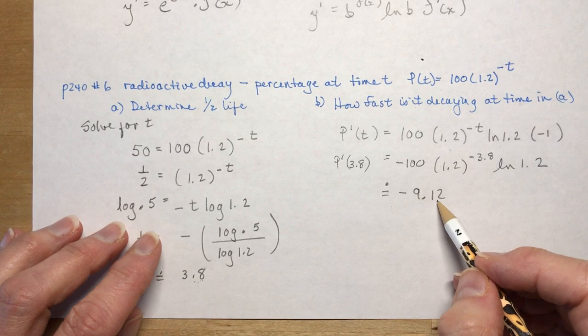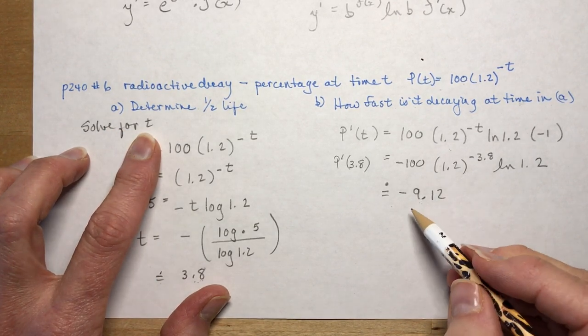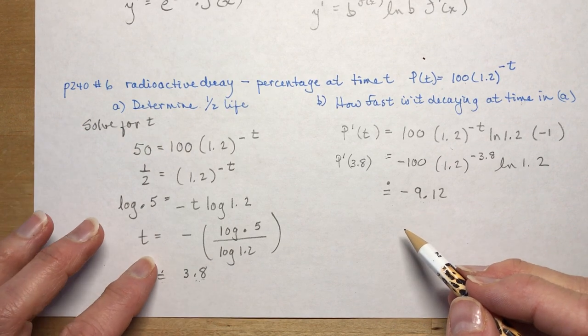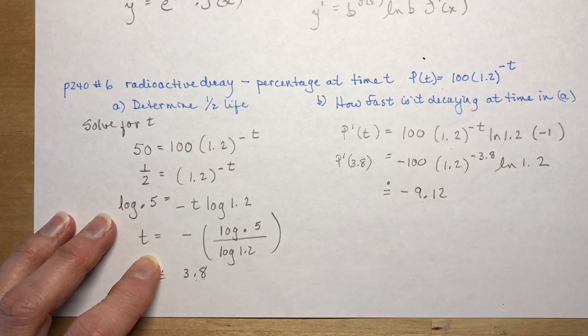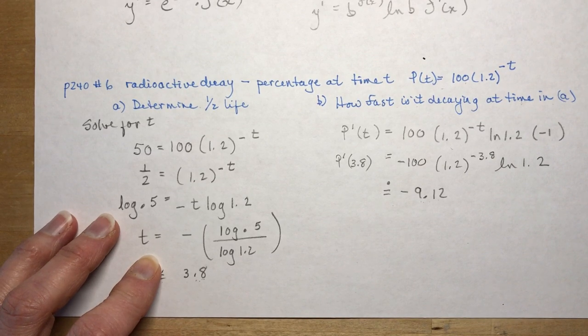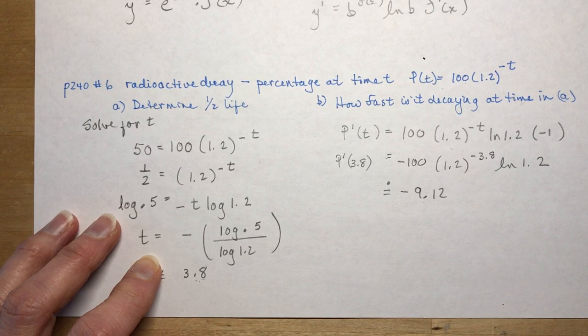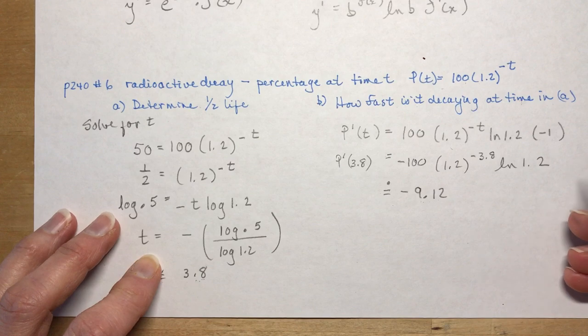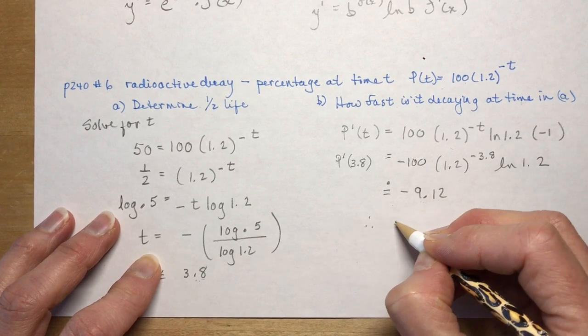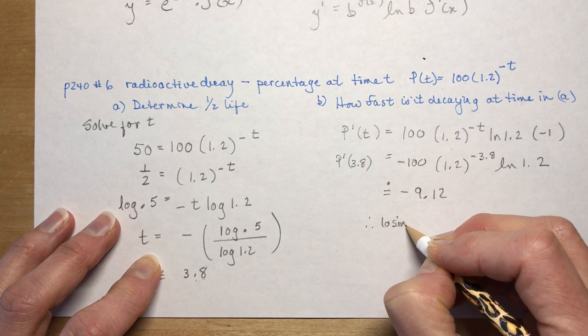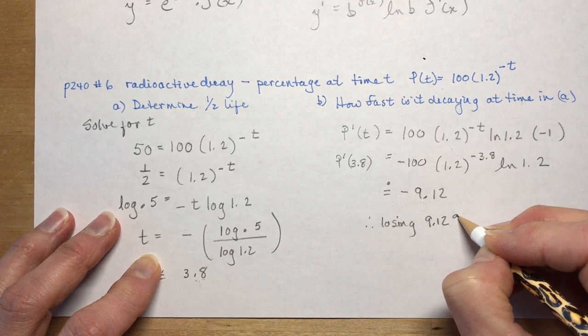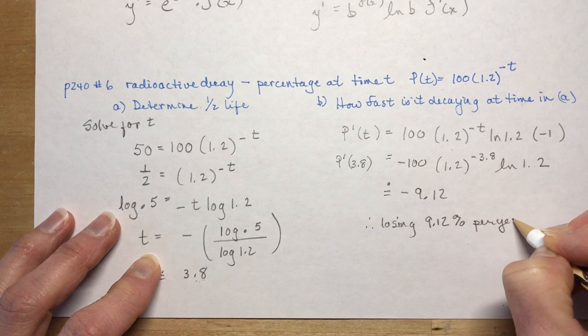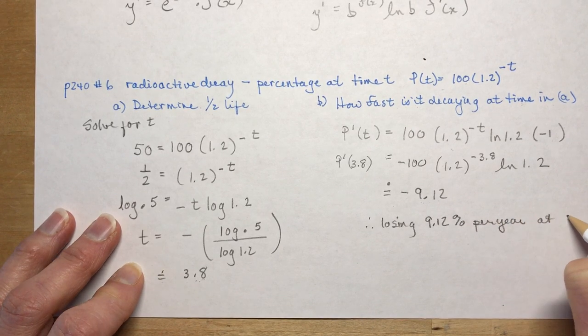So it's decaying, so our answer should be negative, and obviously it's going to be. So I have minus 100 times, remember with calculators, you've got to use a lot of brackets, 1.2 to the power of bracket minus 3.8. I'm going to put an equal sign there. And then times the ln of 2, oh, not 2, 1.2, equals minus 9.12 approximately. So that means it's decaying at 9.12, I think, I didn't have the question brought up here, but I think it was grams per hour, maybe? You'll have to look that up yourself. It's years and percentage P, oh, so it's just a percentage. So you're losing 9.12%, therefore losing 9.12% per year at 3.8 years.